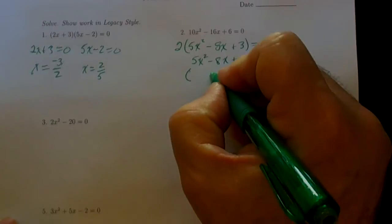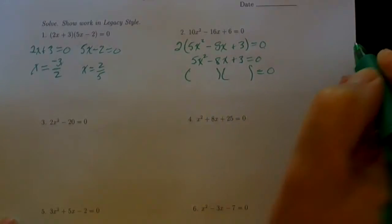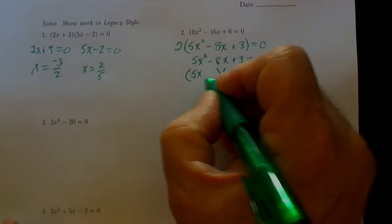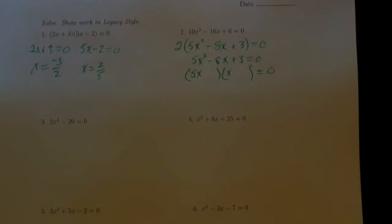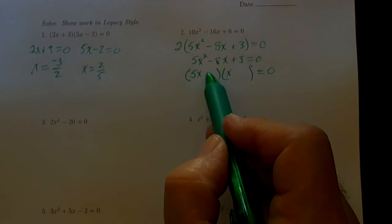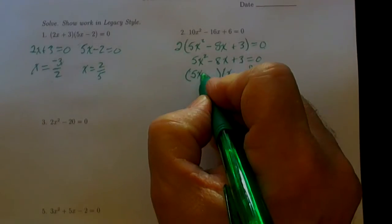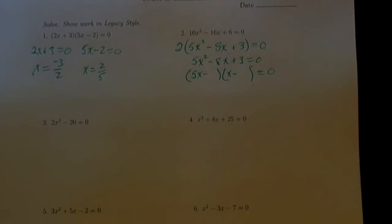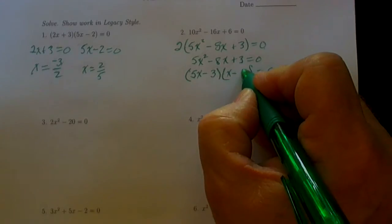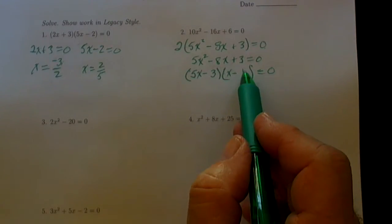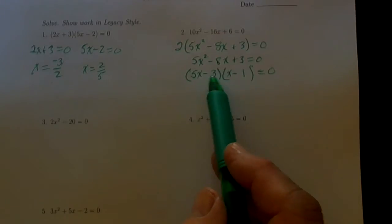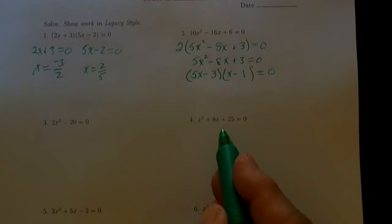Now we're hoping this will factor, though polynomials don't always factor — sometimes they're prime. We'd need a 5x and an x to get the x squared term. We need a 1 and a 3 to produce the constant 3, and both must be negative since the middle term is negative. Placing a 3 in one position and a 1 in the other gives minus 3x and minus 5x... actually minus 3x and minus 5x... a minus 3x and a minus 5x, yielding minus 8x. So minus 3 times minus 1 gives 3 and the middle term works out.